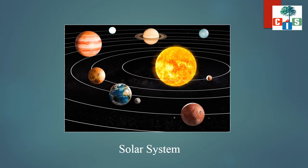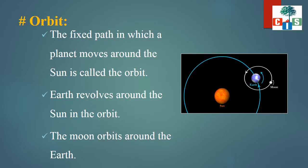Now you can see, near the Earth there is the Moon. The Earth revolves around the Sun in the orbit — you can see in the picture. As well as the Moon orbits around the Earth. It means the Moon also revolves around the Earth in a fixed path.